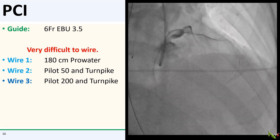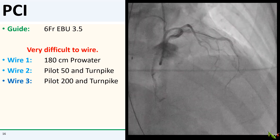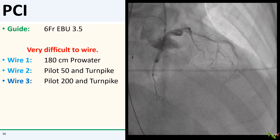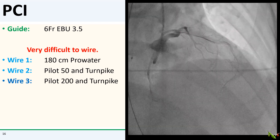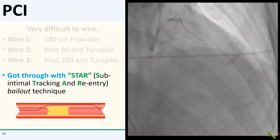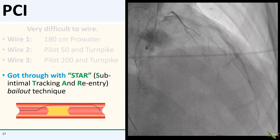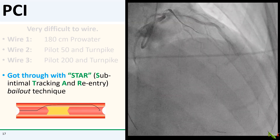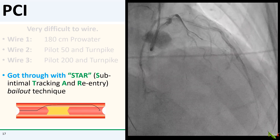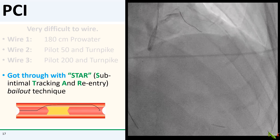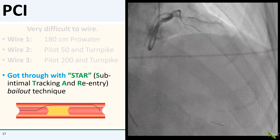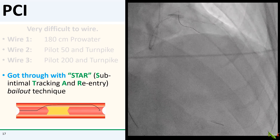This was incredibly difficult to wire. I couldn't get through with a ProWater or a Pilot 50 wire. I couldn't get through with a Pilot 200 wire either, even using a Turnpike microcatheter. I thought my wire was almost certainly in the dissection plane. But the patient was crashing, and I had to get the wire through. So I decided to try STAR — subintimal tracking and reentry. The idea in STAR is that your wire is usually still fairly close to the surface in the subintimal space, so if you keep pushing your wire forward down the vessel, eventually it will pop back into the true lumen. That's fortunately what happened. I was able to STAR my wire down the LAD, and it probably went back into the true lumen in the distal LAD. You can see the long dissection in the mid-LAD, and maybe thrombus or more dissection in the distal LAD.